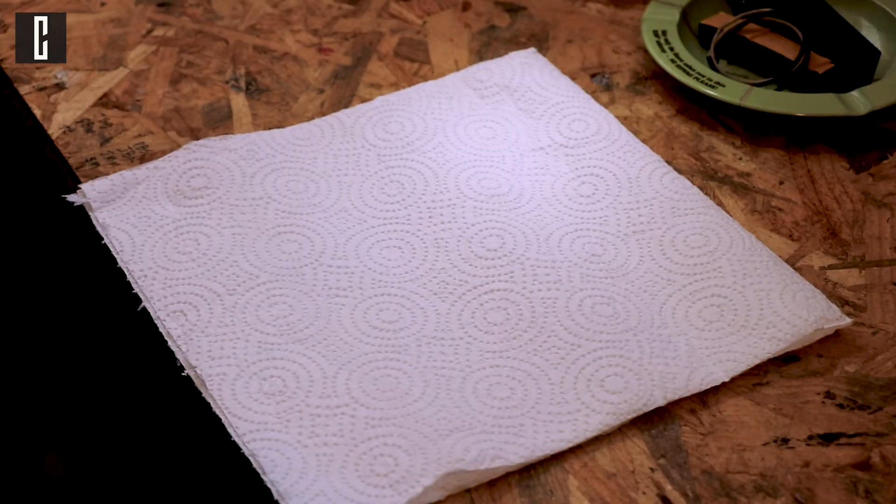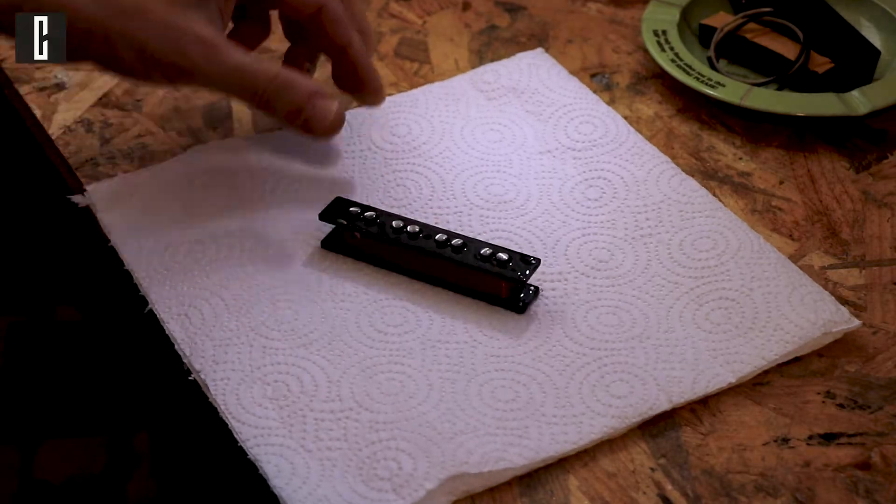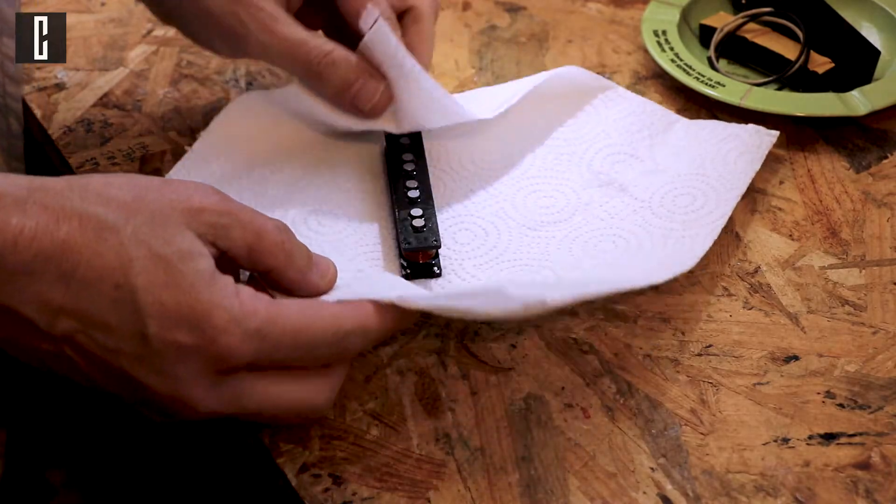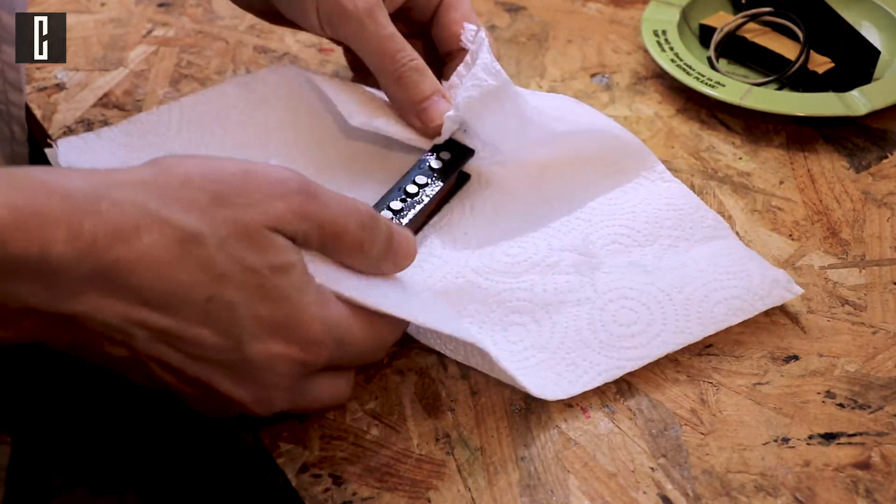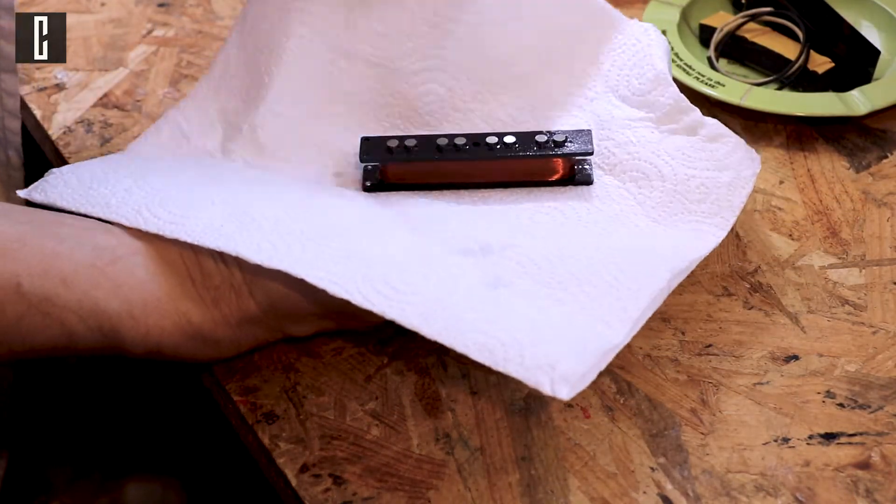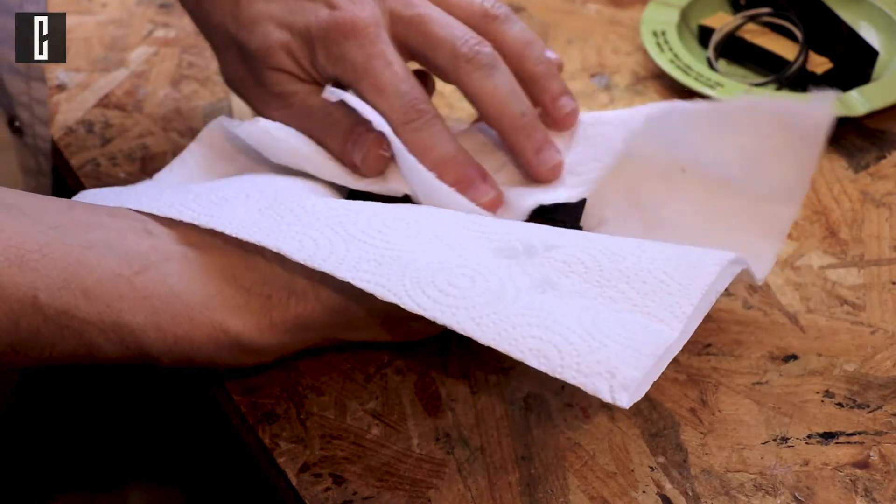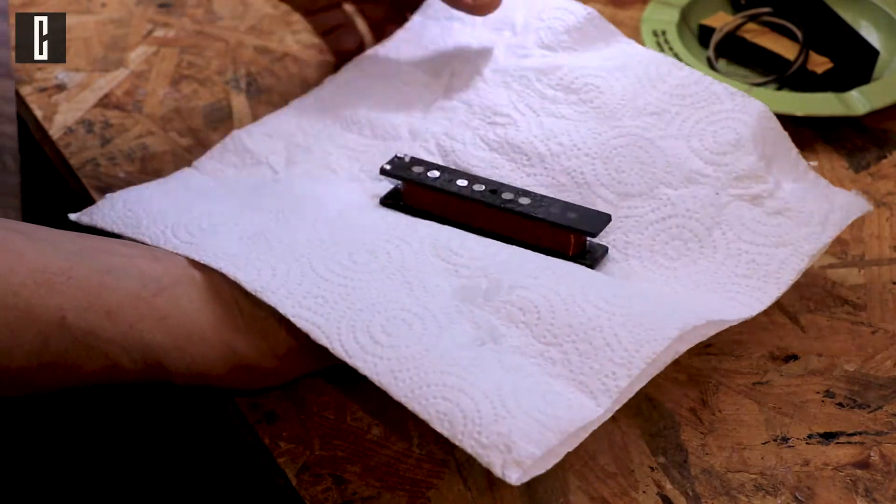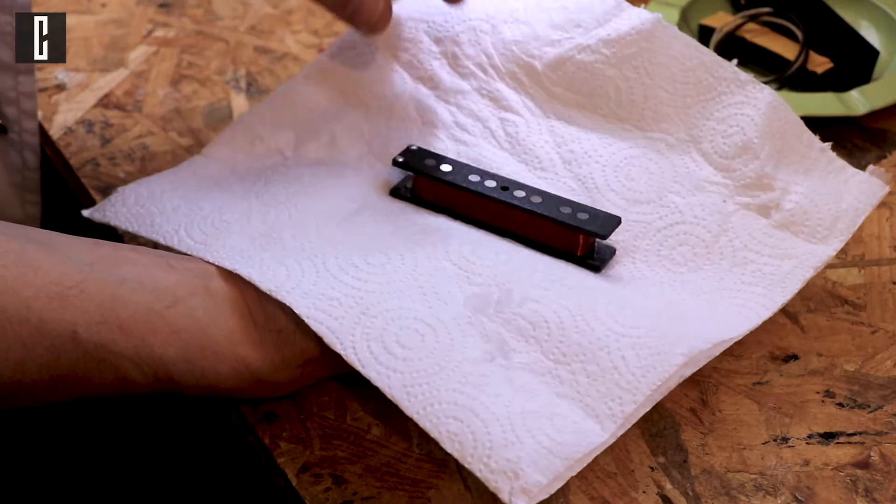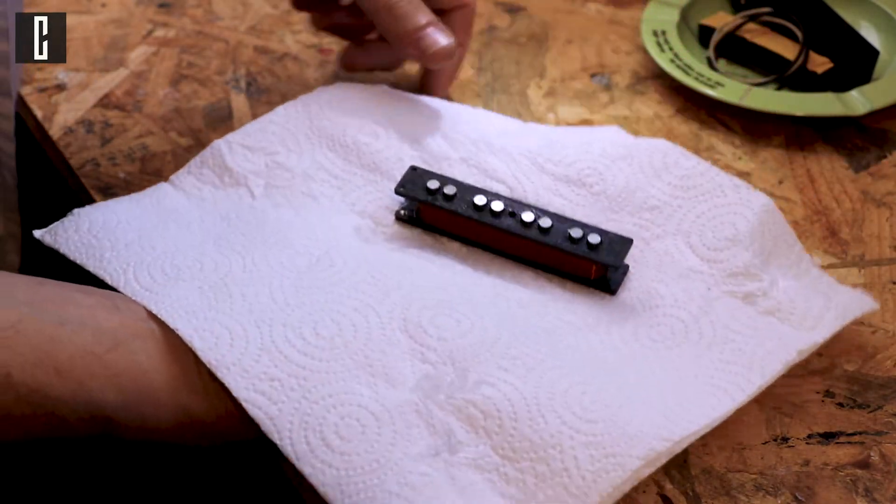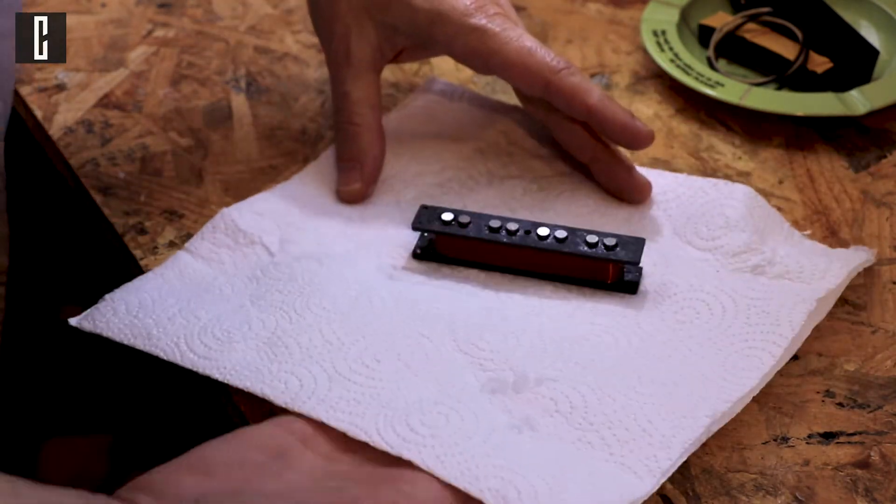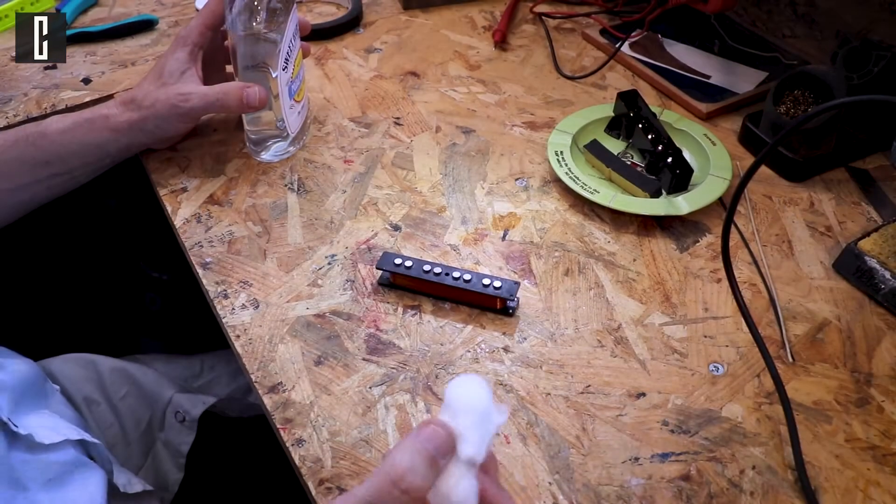We're gonna use this paper towel to clean the pickup from all the excess wax and we just absorb everything to the towel. We'll try not to touch the coil itself, only the top and bottom of the pickup. Like so, and we'll just let it sit for a while to cool down and harden. This is nice.